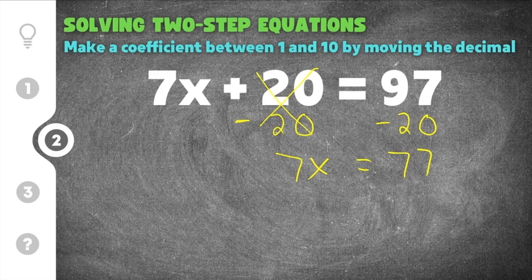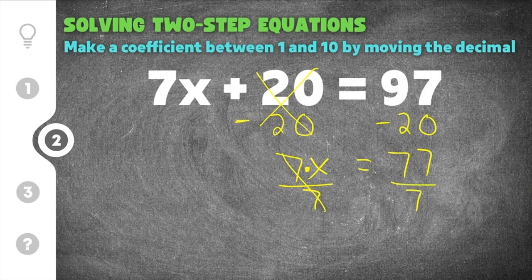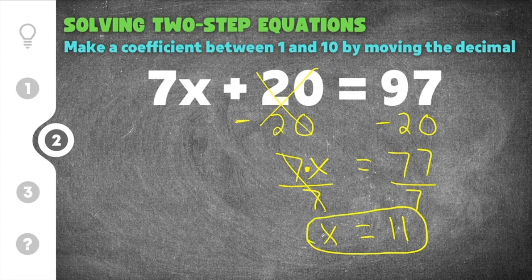We moved the 20 over to join the 97. Now the last step is to get rid of the coefficient of 7 on the x. A coefficient means 7 times x, so the opposite is to divide by 7. We divide both sides by 7 — the coefficient cancels on the left, leaving just x, and 77 divided by 7 is 11. So our solution for this two-step equation is x equals 11.